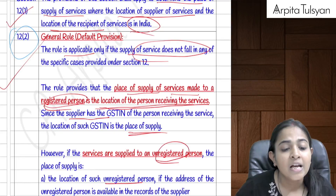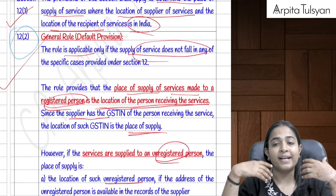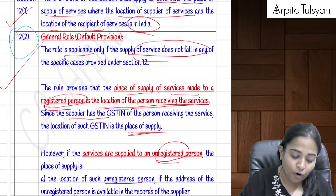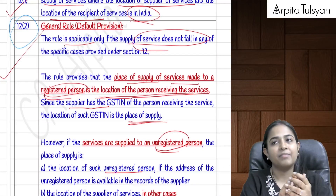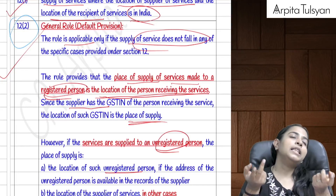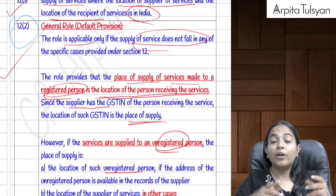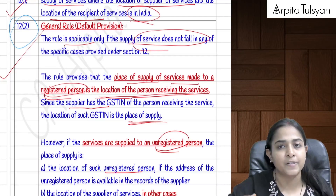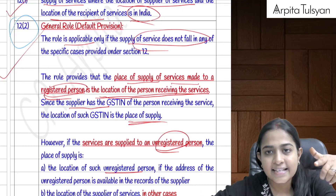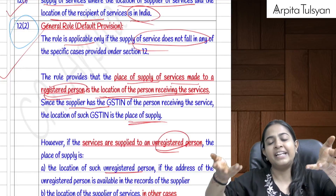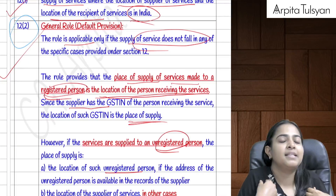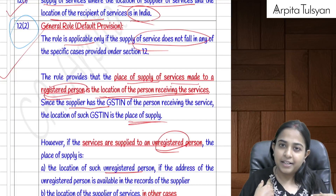Under Section 12(2), if the service is provided to an unregistered person and the address of that person is available, the place of supply is that address. If the address is not available, the place of supply defaults to the location of the supplier.